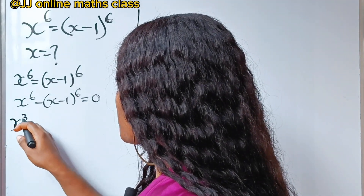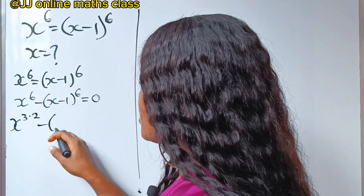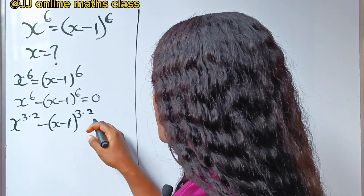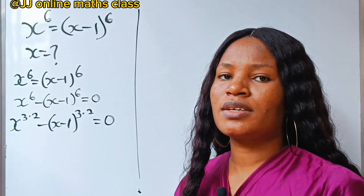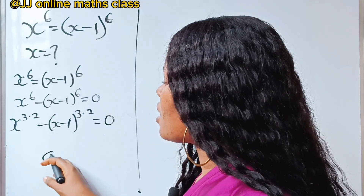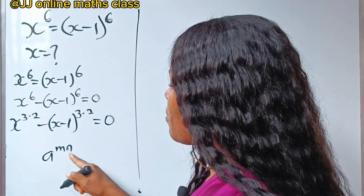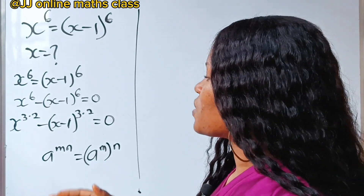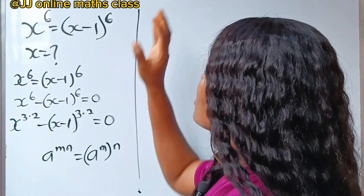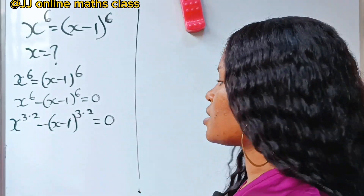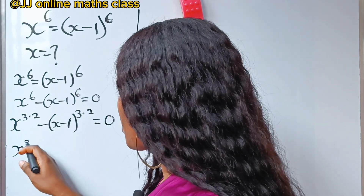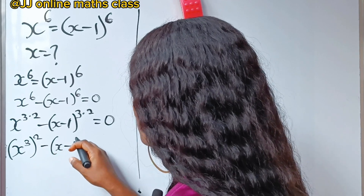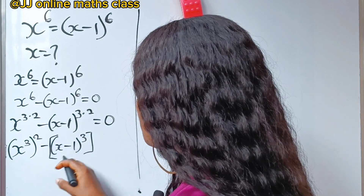This can be written as x raised to the power of three multiplied by two, minus x minus one raised to the power of three multiplied by two, equals zero. Recalling the law of indices: a to the power of m times n equals a to the power of m raised to the power of n. So we can write this as x to the power of three, raised to the power of two, minus x minus one to the power of three, raised to the power of two, equals zero.